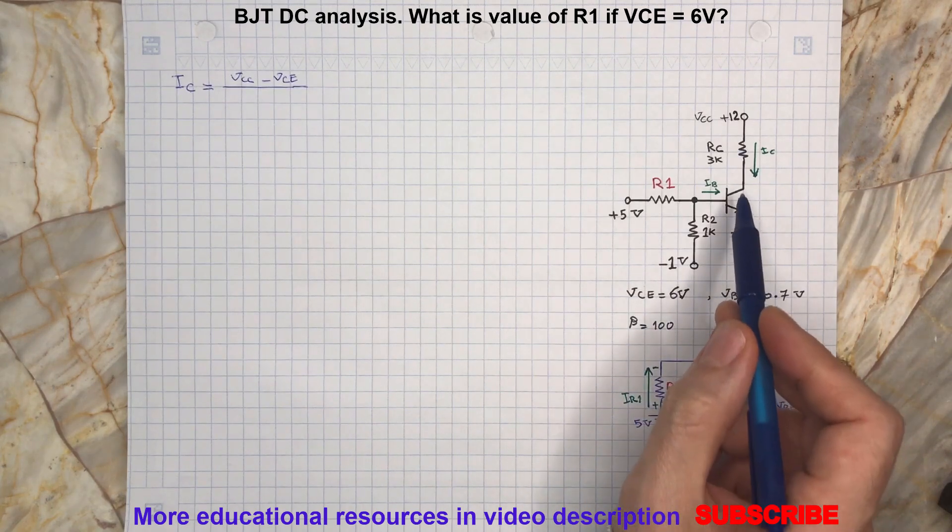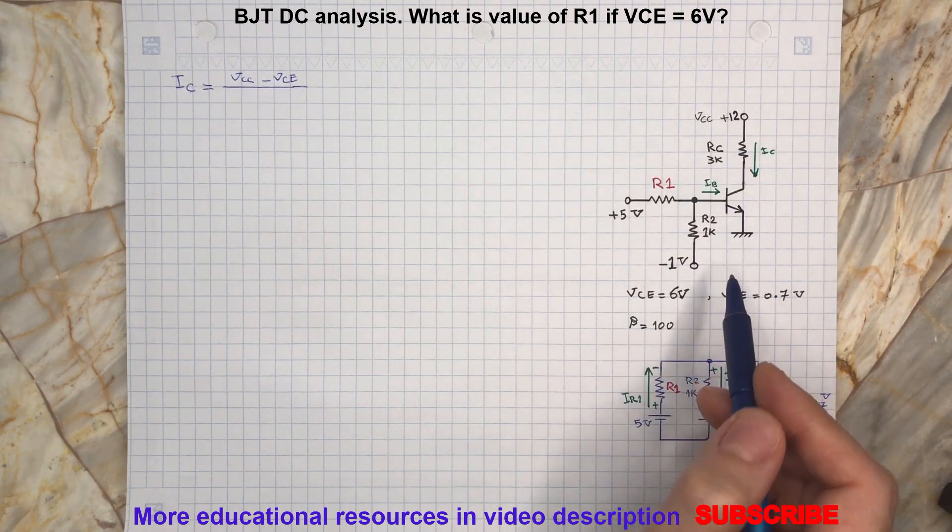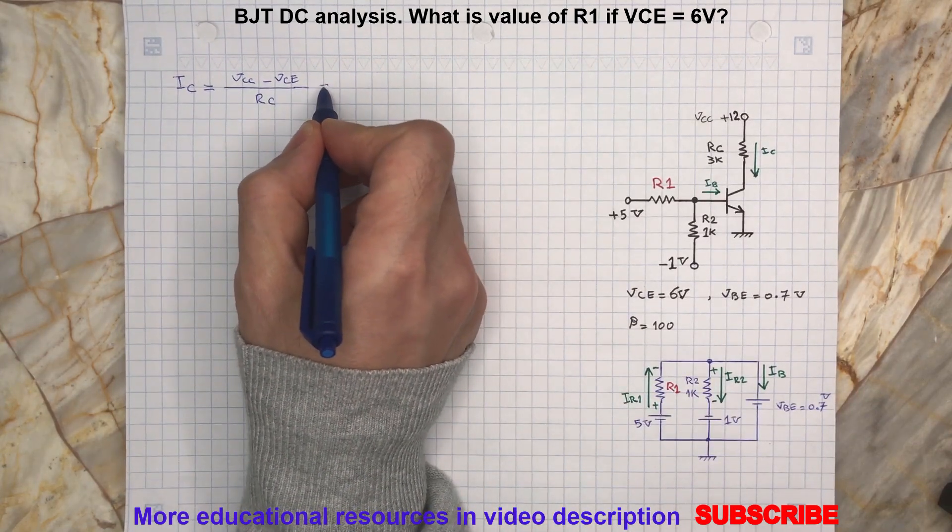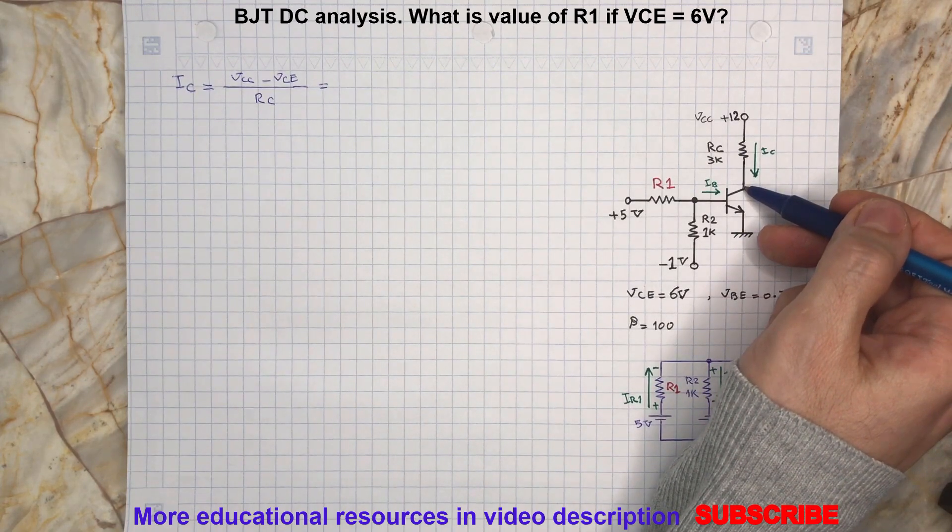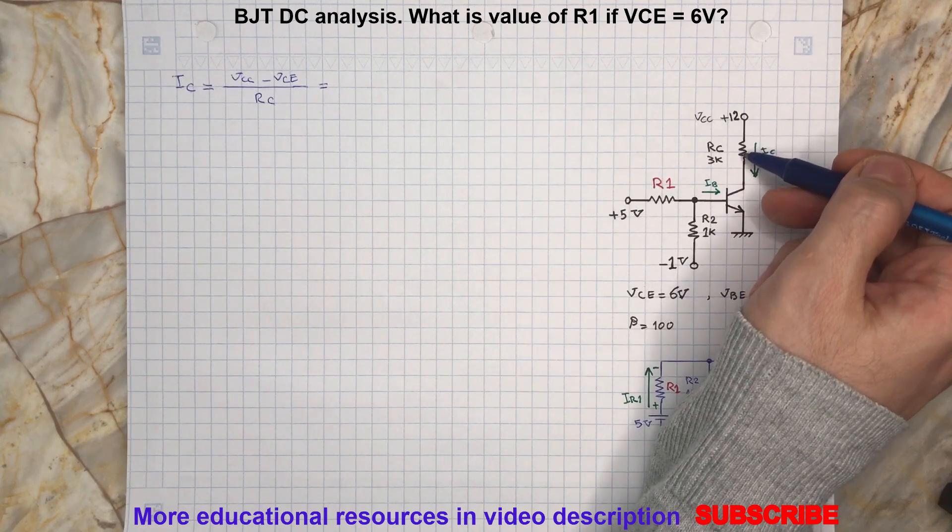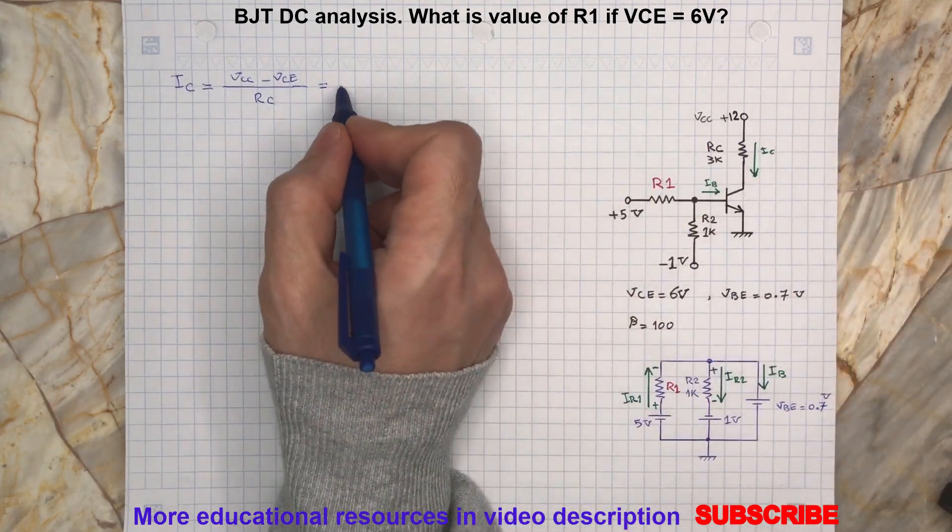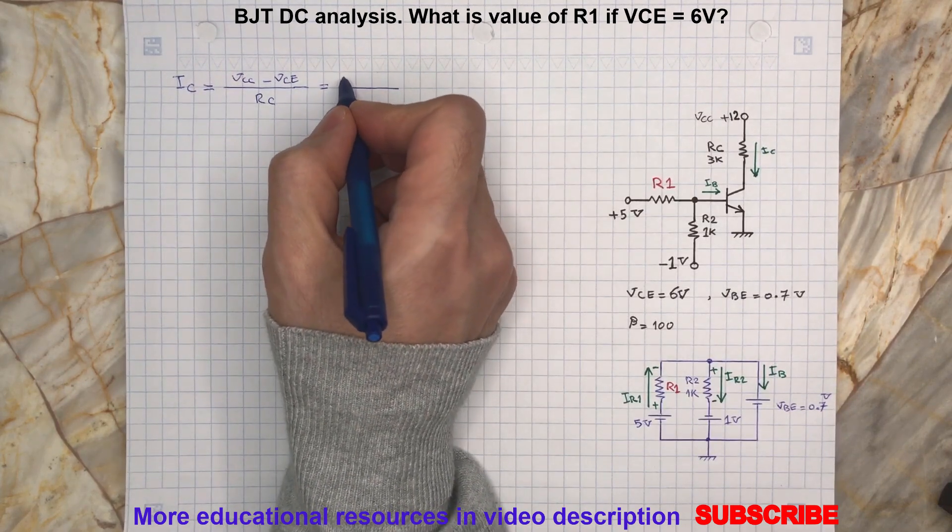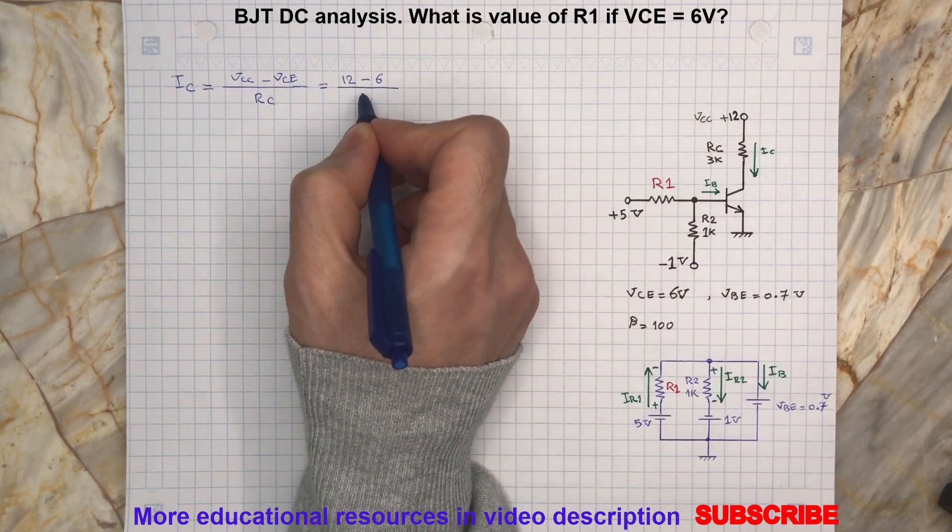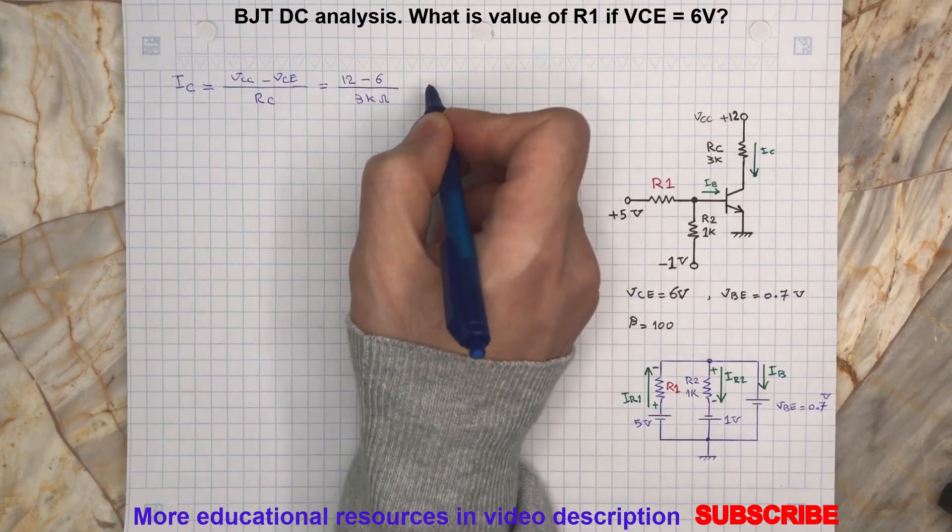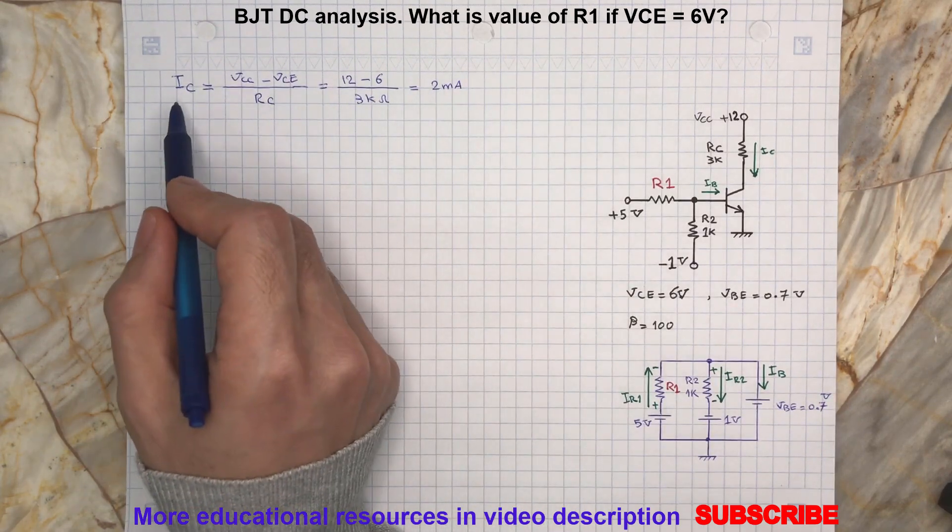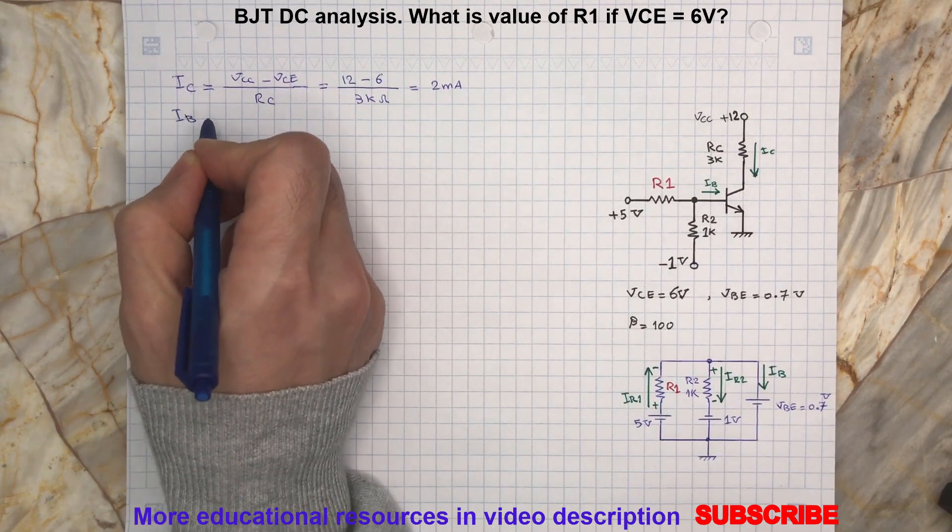Just remember the voltage collector to emitter is given in this example which is 6 volt. So we know collector voltage, emitter is grounded and we know VCC other side of the RC. Now by knowing IC we can calculate IB, base current.